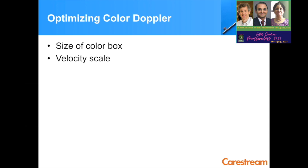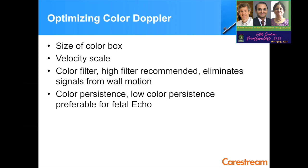The size of the color box should be very small, just occupying the fetal heart. The velocity scale has to be adjusted: if you are looking at high-velocity structures like two inflows or two outflows, the velocity scale can be on the higher side. But if you are trying to look at pulmonary veins, you will have to lower the velocity scale. A high color filter is recommended, and low color persistence is recommended. These settings are set by the application specialist in the cardiac presets, but one should know how they help in fetal cardiac assessment.